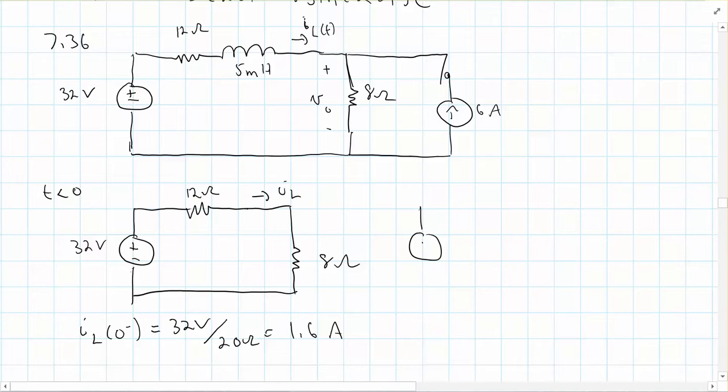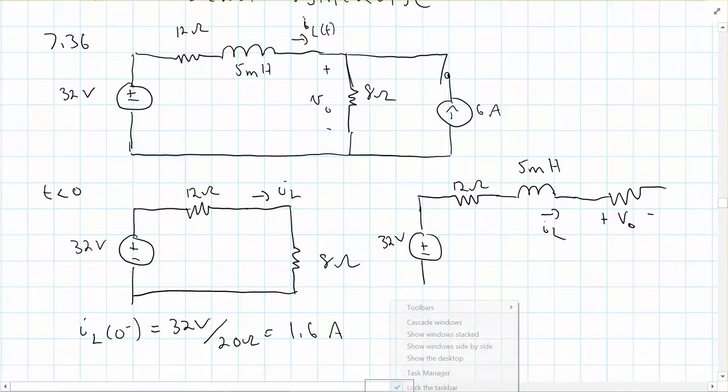So what I have here, plus minus 32 volts, 12 ohms, 5 millihenry. Now IL is still in this direction, but now we have to be careful here. When I do a source transformation here, this would be plus minus VO on the 8 ohm resistor.